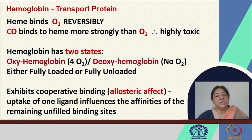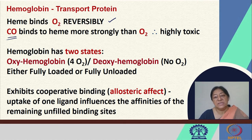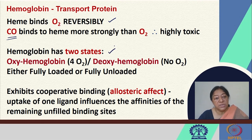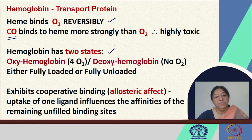Hemoglobin as a transport protein binds oxygen reversibly. Carbon monoxide binding to hemoglobin illustrates why it is highly toxic. Hemoglobin has two states: oxyhemoglobin, fully loaded with oxygen across its four subunits, and deoxyhemoglobin, fully unloaded. It exhibits cooperative binding and an allosteric effect where the uptake of one oxygen molecule influences the affinity of the remaining unfilled binding sites on the other subunits.